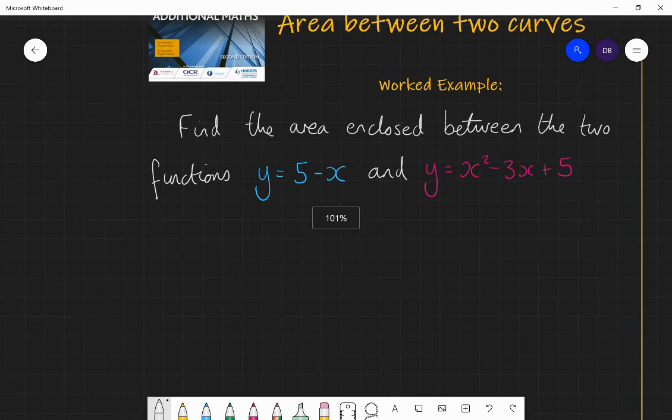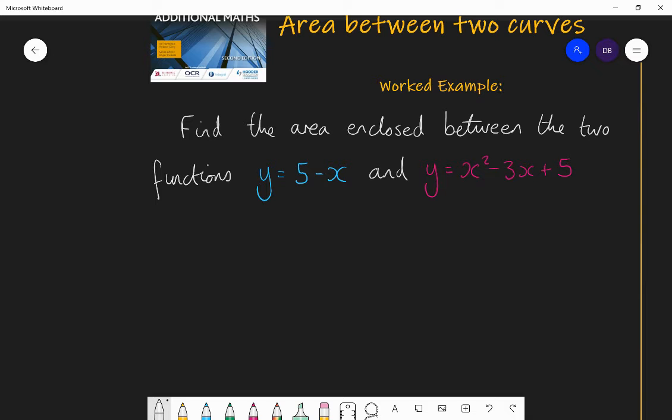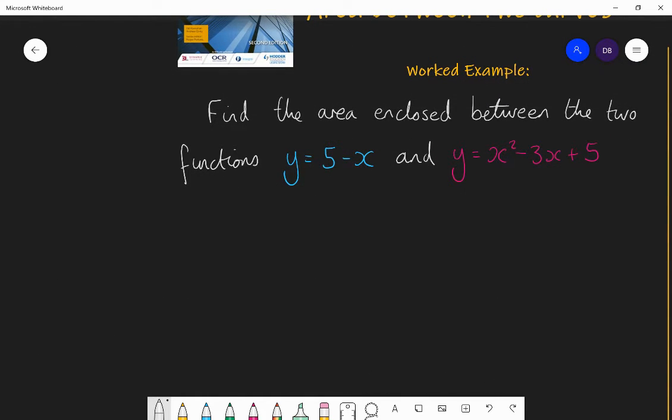I want to find the area enclosed between the two functions y equals 5 minus x and y equals x squared minus 3x plus 5. Now, in this question, we're not given the limits of the area, x is a and x is b. So that sort of indicates that the curves or the functions will enclose an area without the need of having two vertical lines to enclose it for us. Now, y equals 5 minus x is a linear equation and it'll have a straight line with a negative 1 gradient going through y equals 5 as a y-intercept. So it'll look something like this.